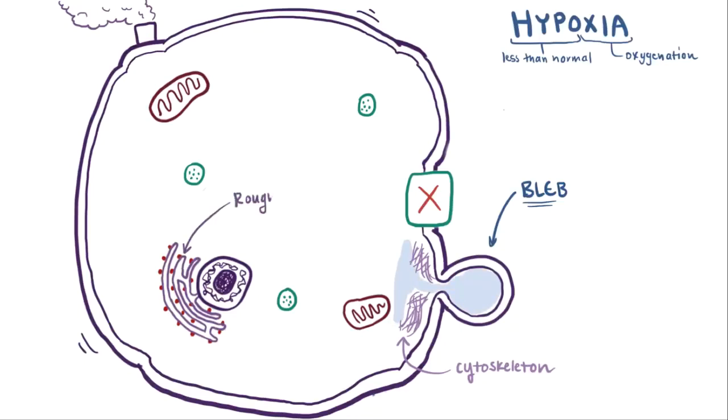Finally, the rough endoplasmic reticulum, or the rough ER, also swells when the cell swells. And remember that the rough ER has all these little ribosomes on its outside, and these are really important for the cell in making proteins. But when the rough ER swells, they detach and stop making proteins. So, protein synthesis goes down.